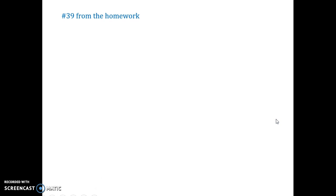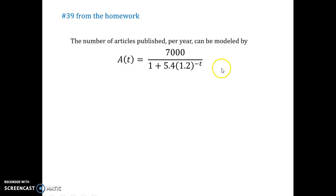Okay, if we go to number 39 from the homework, so this is my last example. The number of articles published per year can be modeled by this function. This is an interesting, it's sort of a power function. Its only variable is right here. You notice how it's gotten negative there? And, t is time in years since 1983.